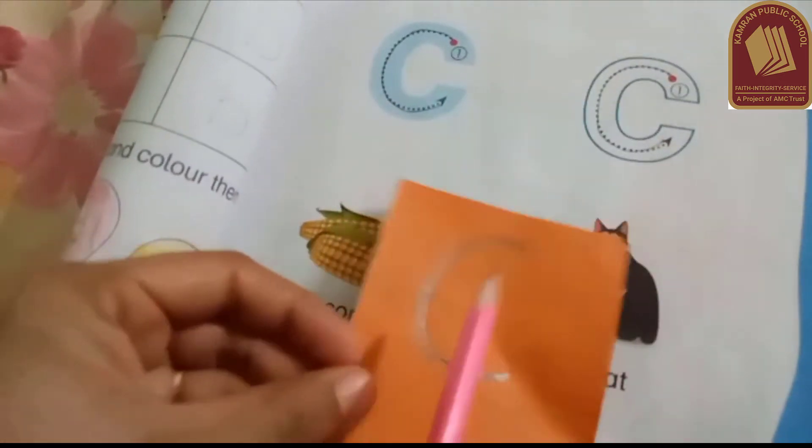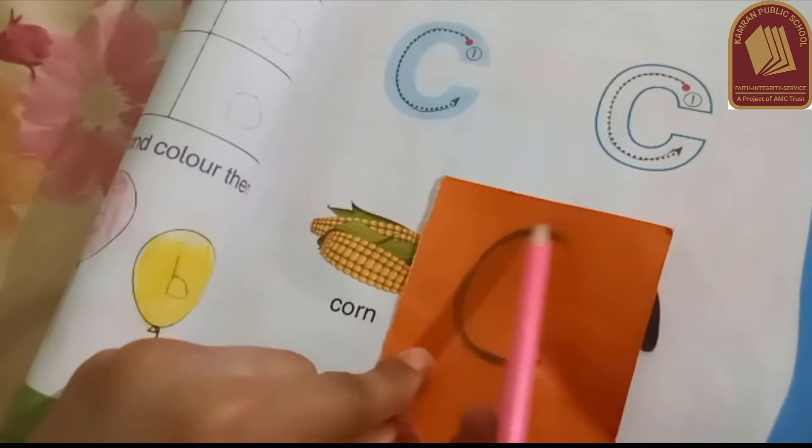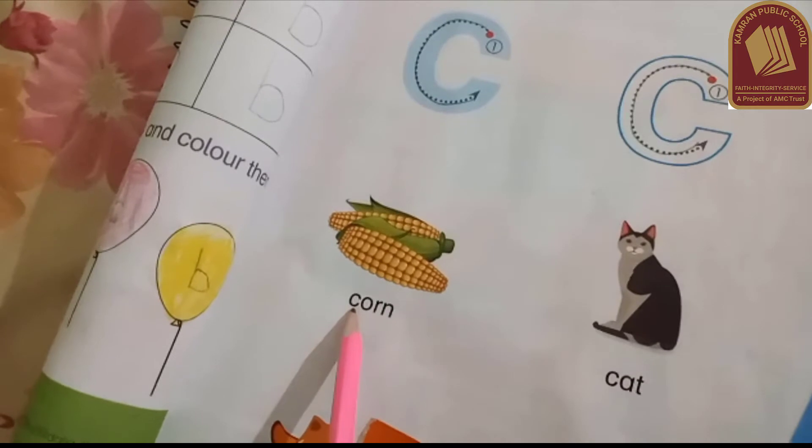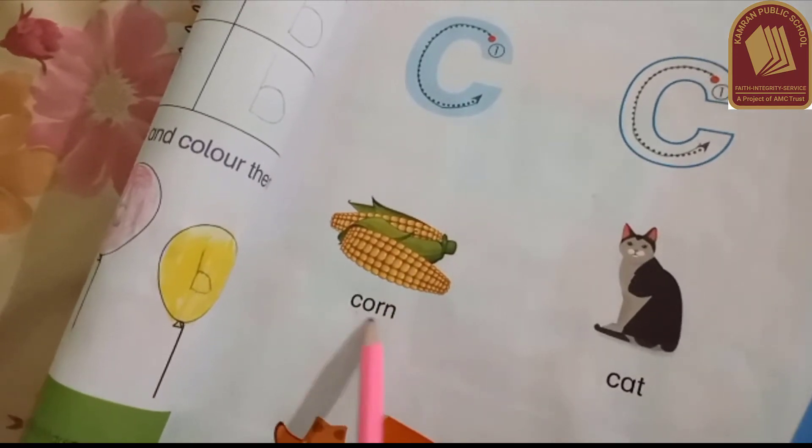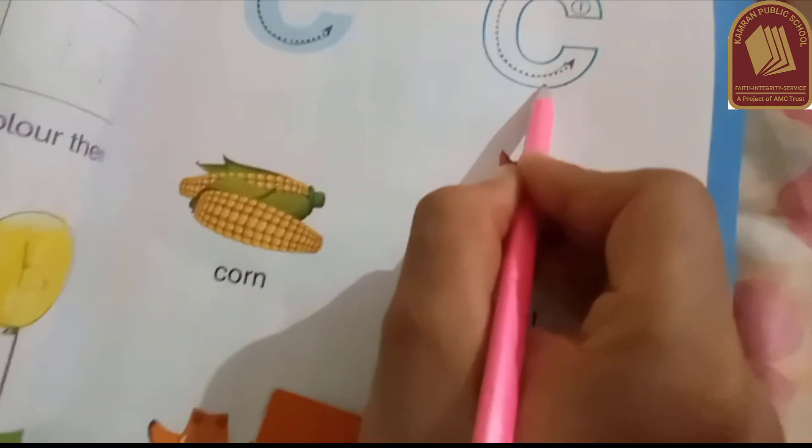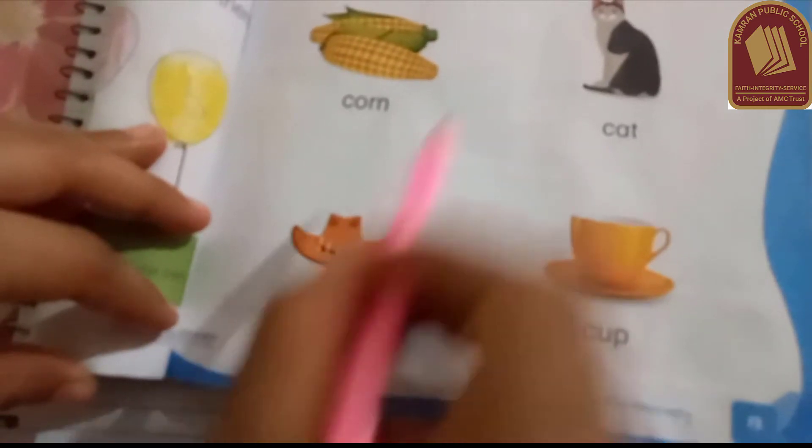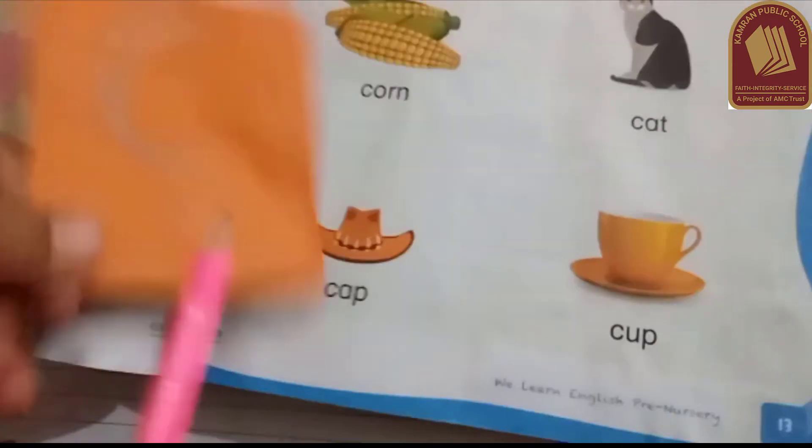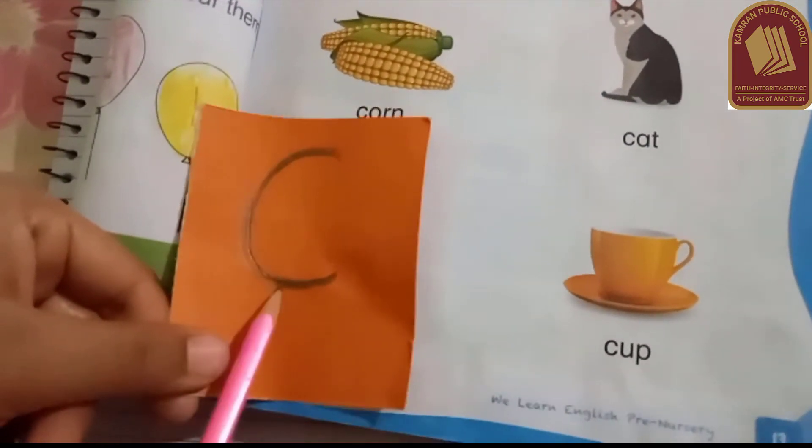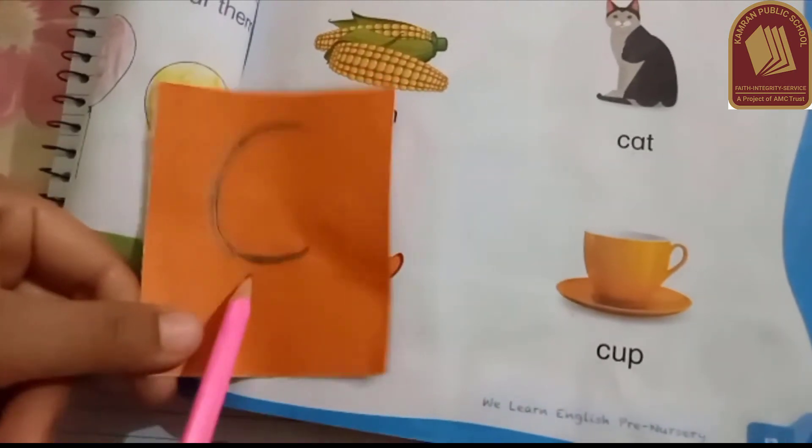This is letter C. This is a curve line. C is for cup, C is for corn.